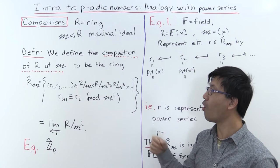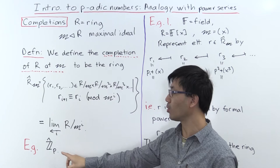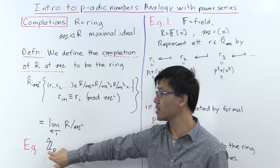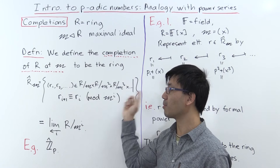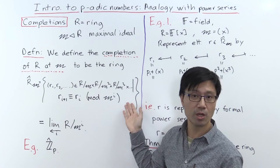Here we have the definition of a ring called the completion of R at M. The case we looked at before was where the ring R equals the integers and the maximal ideal is P, a prime number — being irreducible inside Z, that gives you a maximal ideal — and we basically have exactly the same setup.